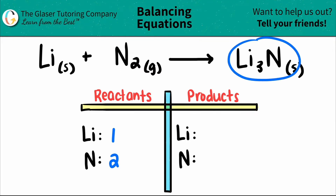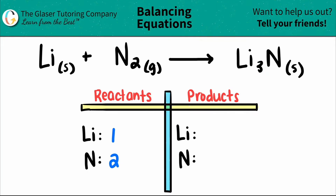Coming over to the product side, I see that I have three lithiums — there's a three subscript there, so I put a three here. And then for the nitrogen, I see that there's nothing there — there's secretly a one there, so I have one nitrogen. So now let's balance.